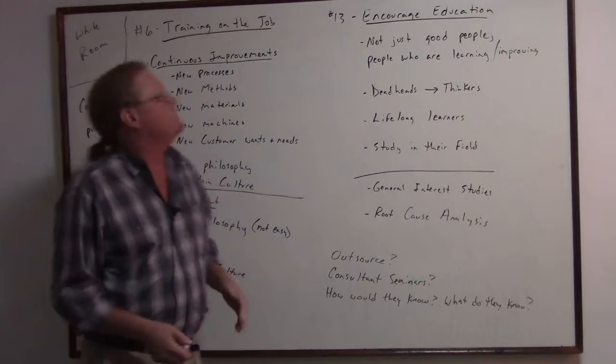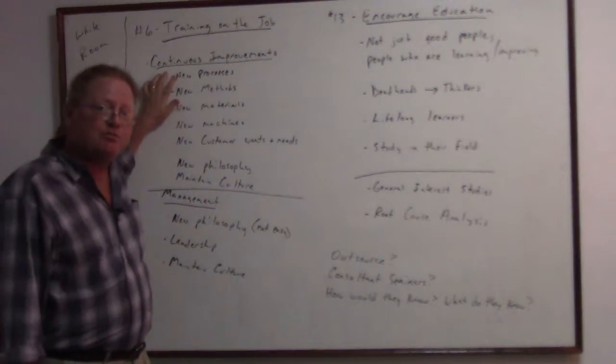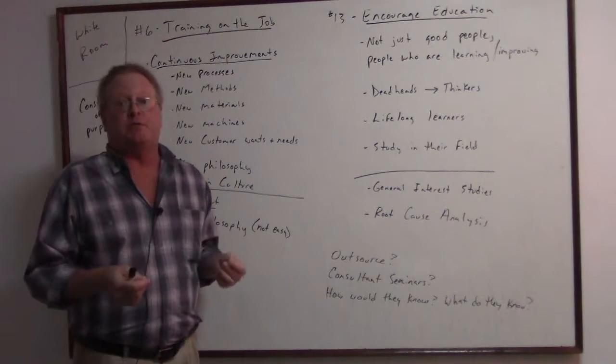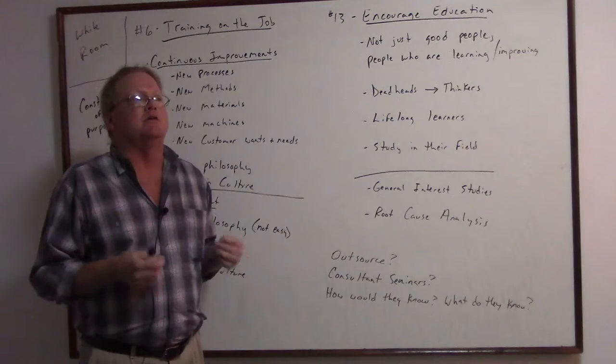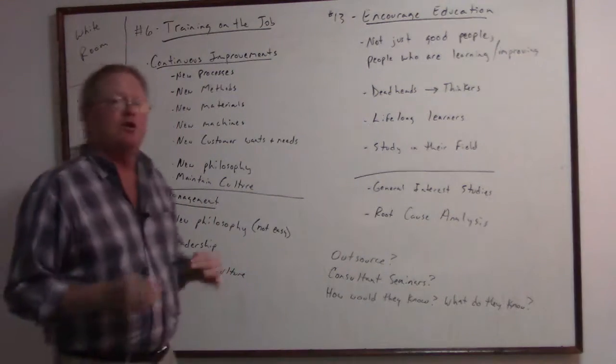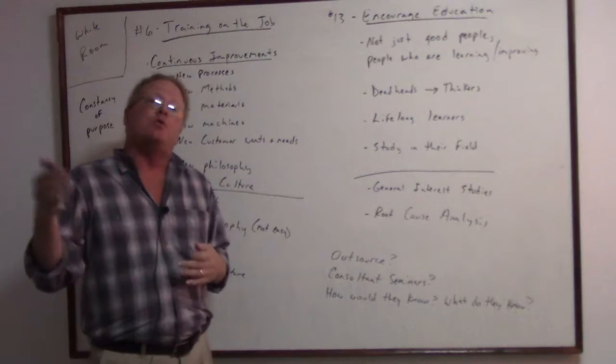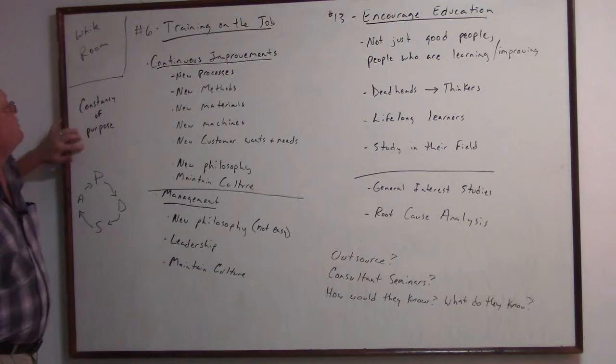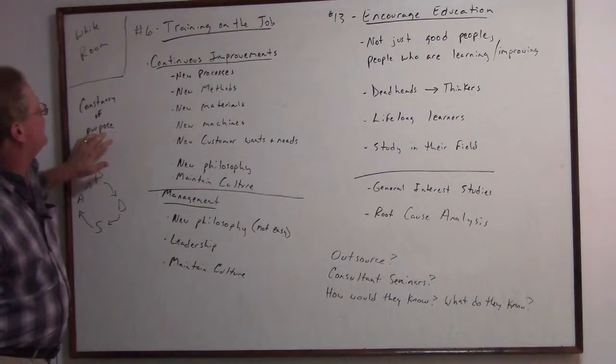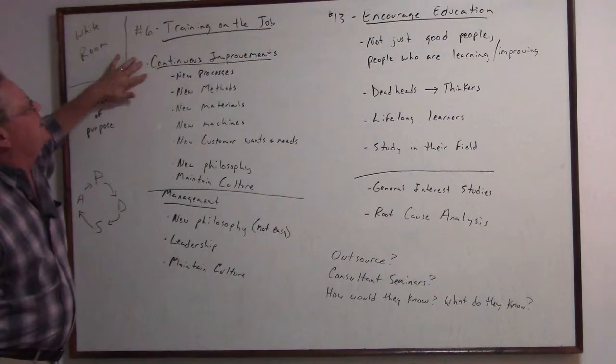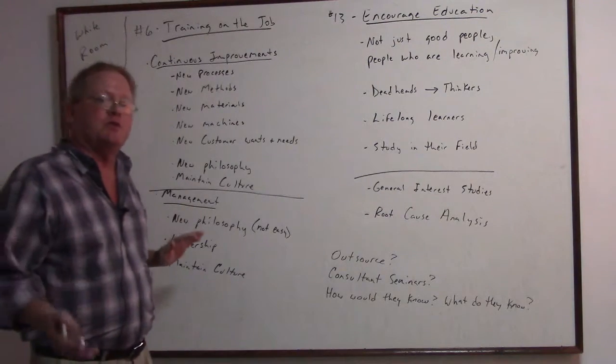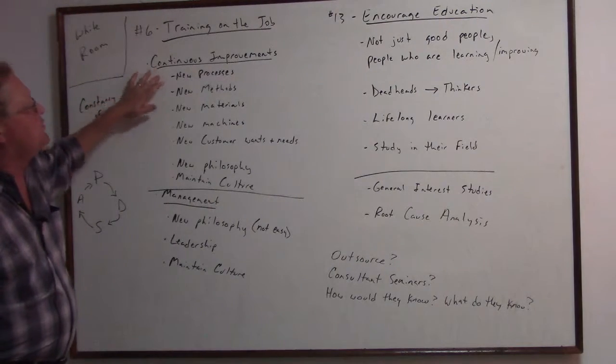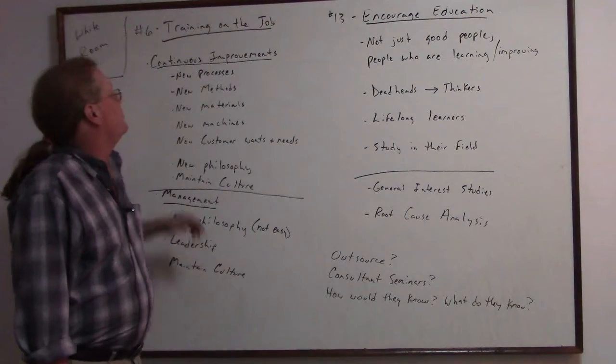For the better, the product is supposed to be becoming higher quality, more consistent, and we're trying to get our cost to go down while that quality is going up. So with constancy of purpose, the key elements are the people and continuous improvements along with the customer.